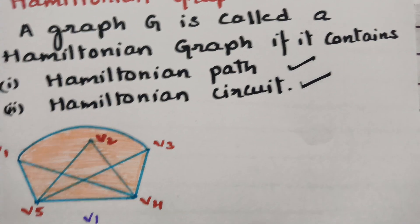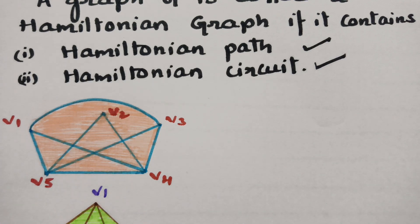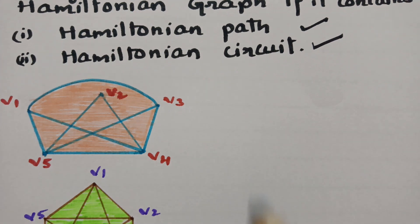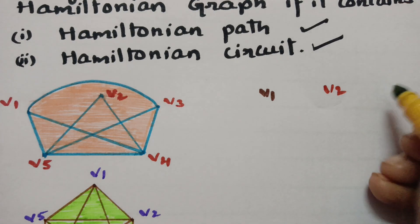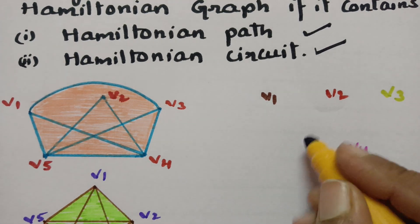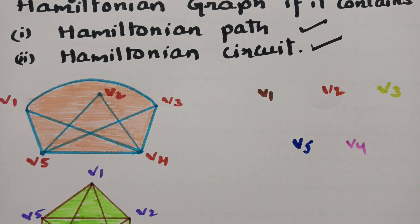First it should have a Hamiltonian path — it should cover each and every vertex once: v1, v4, v3, v5, and v2. It covers all vertices once. Now there are five vertices: v1, v2, v3, v4, and v5. I have to cross each and every vertex and also maintain the Hamiltonian circuit where the starting and ending vertex must be the same.